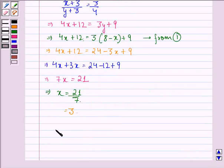Now, from equation 1, we have y is equal to 8 minus x. This implies y is equal to 8 minus 3, that is equal to 5.